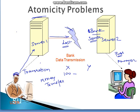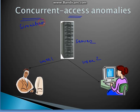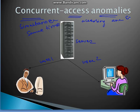The third problem is concurrent access anomalies. Here is one server and both users — user number one and user number two — are concurrently, meaning simultaneously, accessing the same data at the same time with the same query. The system then hangs up and an error is created in the database. This is another kind of problem in file processing systems.